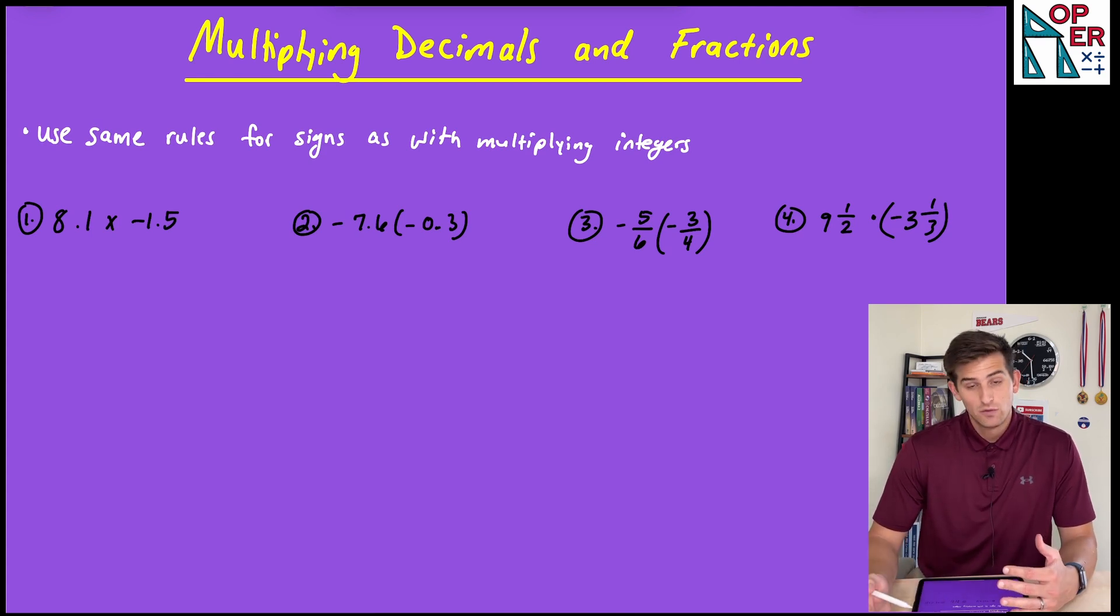And then for three and four, when we're multiplying fractions, we just multiply straight across, numerator times numerator, denominator times denominator, and we need to simplify if necessary. For number four, notice we have a mixed number in there, so we might have to change that into an improper fraction, which we've done in previous videos on how to do that. And then we can multiply straight across.